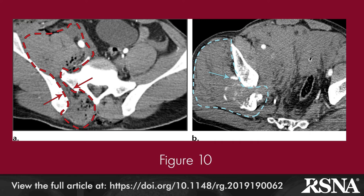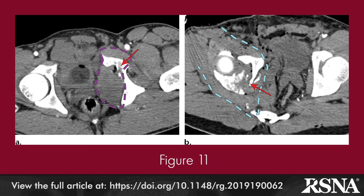Acetabular fractures injure the obturator and inferior gluteal arteries. Figure 11a shows an axial CT image in a 45-year-old man at the level of the acetabulum demonstrating an obturator artery injury, a left acetabular fracture, and a territorial hematoma in the obturator internus muscle. Figure 11b shows obturator and inferior gluteal arterial combination injuries, right acetabular fractures, and territorial hematomas around the obturator internus, gluteal muscle, right hip joint, and greater sciatic foramen.